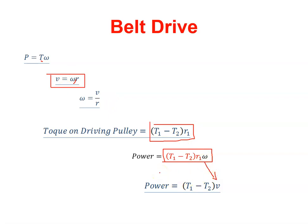So in summary, the power across a pulley using belt drives is the difference in tension in the belts between the tight side and the slack side times the velocity of the belt, or times omega times the radius of the belt.